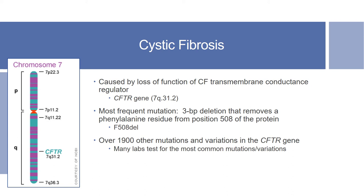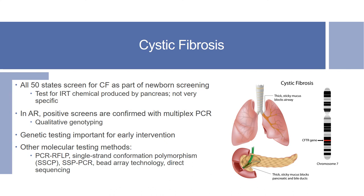These kits can be customized based on location, as some gene mutations differ depending on the population. All 50 US states screen for cystic fibrosis as part of newborn screening using an IRT test — a chemical produced by the pancreas — though this screen is not very specific for CF. In Arkansas, positive screens are confirmed with a multiplex PCR qualitative genotyping test. Other molecular testing methods to detect CF include PCR-RFLPs, SSCP, PCR, bead array technology, and direct sequencing.